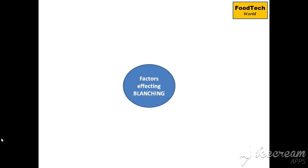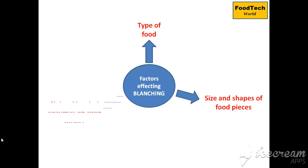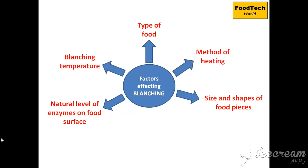Factors affecting blanching include: the type of vegetable or fruit — most vegetables must be heated to a minimal temperature to inactivate natural enzymes; size and shape of food pieces; endogenous or natural enzymes present on food surfaces; blanching temperature; method of heating; and heat conductivity of food pieces, which refers to the material's ability to conduct heat.